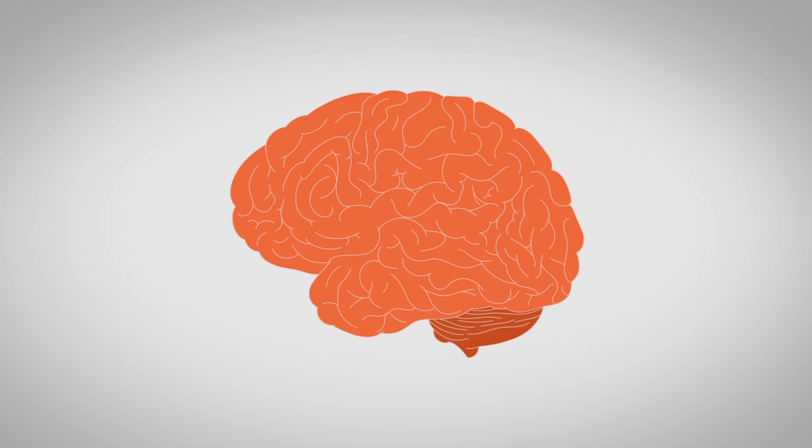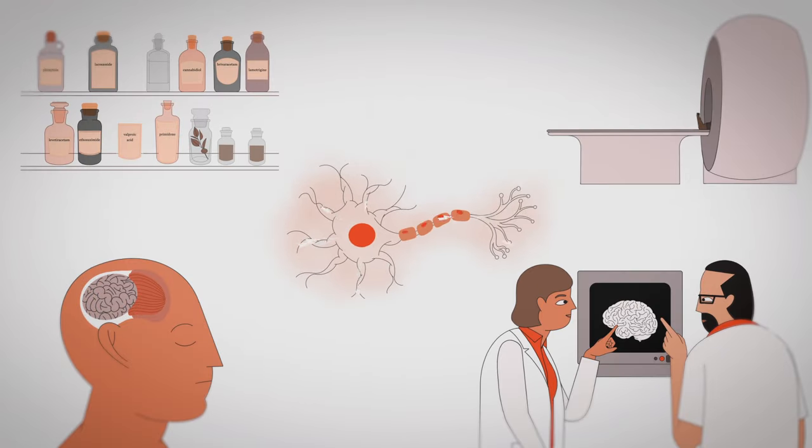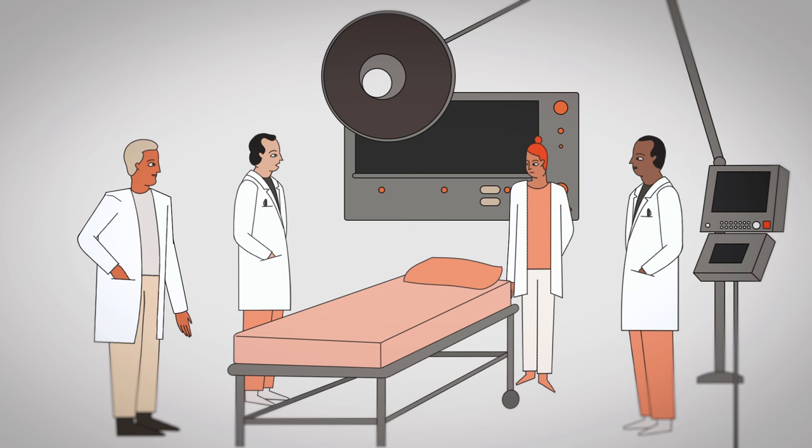In cases without clear brain damage or certain types of pre-existing conditions, it's incredibly difficult to determine what causes neurons to misfire. It's also not always clear why some treatments are effective, and even more mysterious are cases where seizures are resistant to existing treatments that work on similar seizure types.